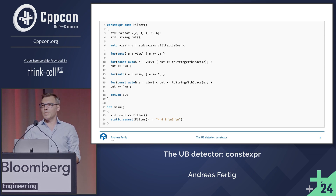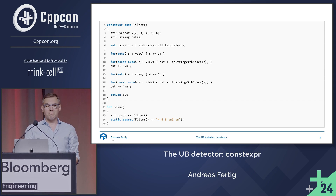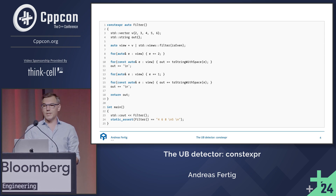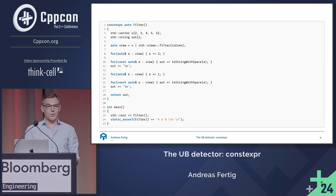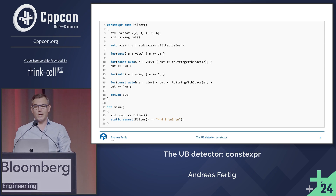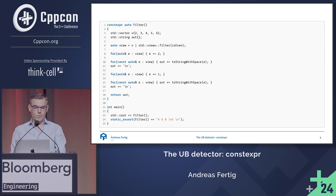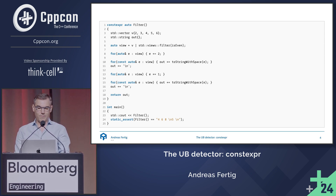Then I do another round with the same filter, adding plus one to every element. This makes all even numbers odd numbers. And this, my friends, is undefined behavior. If I now go over this entire sequence again with the same filter view and stash all the numbers into the string, you can see from the static assert right below: the output is four, six, eight, and five.